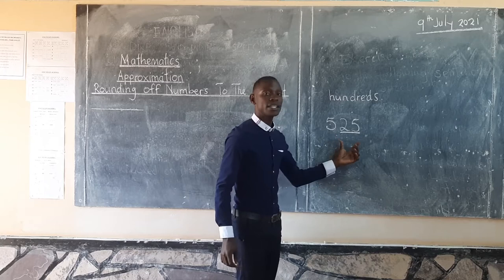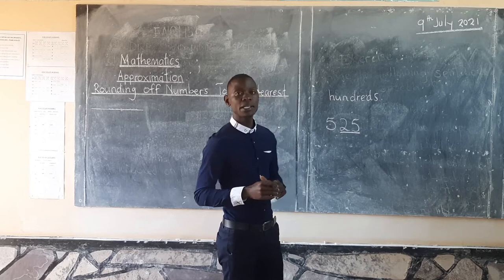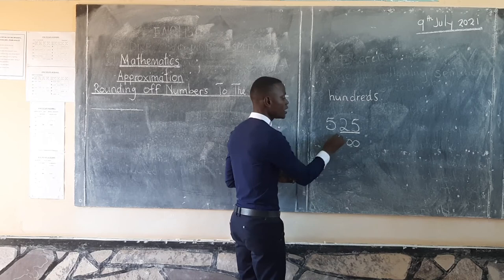The first step: you look at the last two digits. Are the last two digits below 50 or more than 50? In the case of 525, the last two digits are 25, which is below 50. All numbers with last two digits below 50 have a value of 0, and you maintain the same hundreds digit.